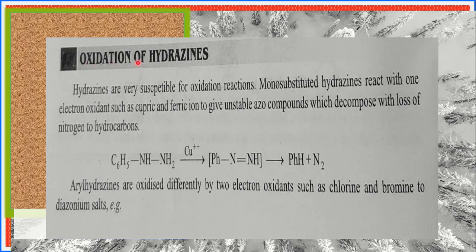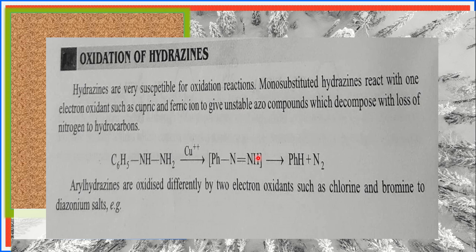Now we come to the oxidation of hydrazines. Upon oxidation of hydrazines, what products are formed? Hydrazines are very susceptible to oxidation reactions. Monosubstituted hydrazines react with one-electron oxidants such as cupric and ferric iron to give unstable azo compounds. These azo compounds decompose with the loss of nitrogen to give hydrocarbon — that is, benzene is formed and nitrogen is released.